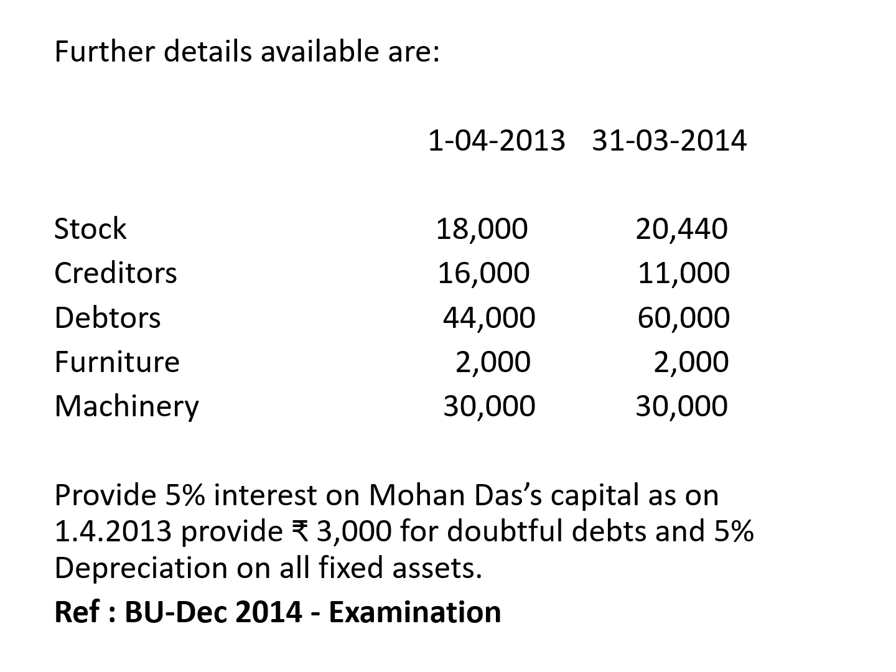Furniture: 2,000 opening and 2,000 closing — no change. Opening furniture goes to the opening statement of affairs; closing furniture goes to the balance sheet. We should check for any depreciation — they have given depreciation at the rate of 5%.